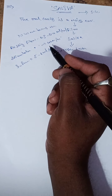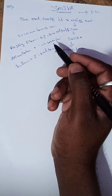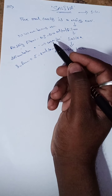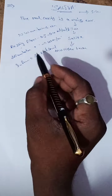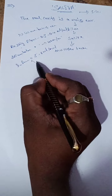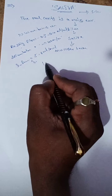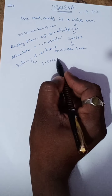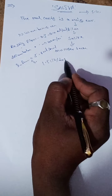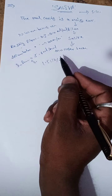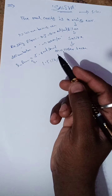This is about the salivary flow rate and normal range. The approximate salivary secretion per day is 1.5 liters per day secreted from the salivary glands.